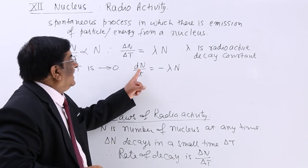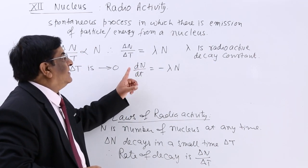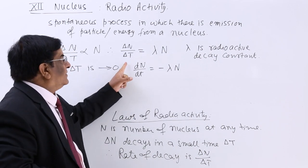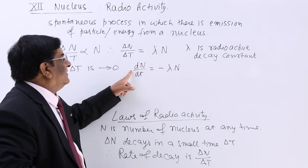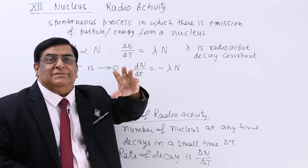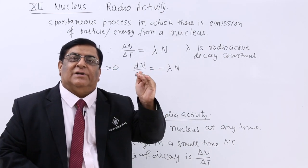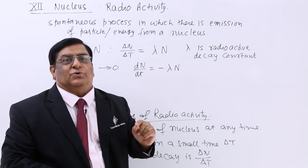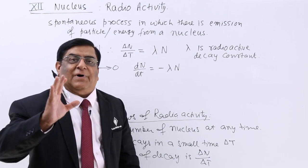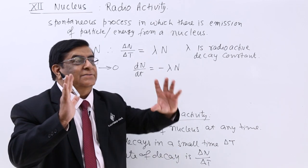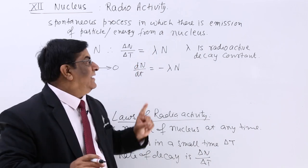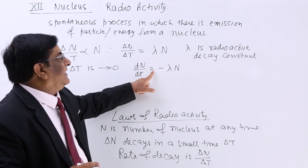Why the minus sign? Because lambda and dN/dt are always positive since decay is happening and is not reversing. But as decay increases, the total number of nuclei decreases — from 1000 to 800, 700, 600. So the minus sign explains that if the decay rate is positive, the rate of change of total nuclei is negative.